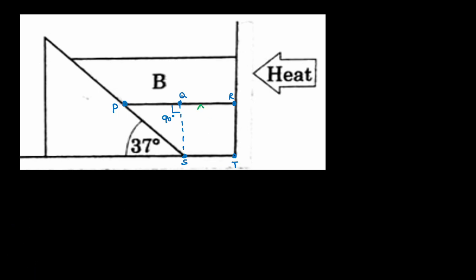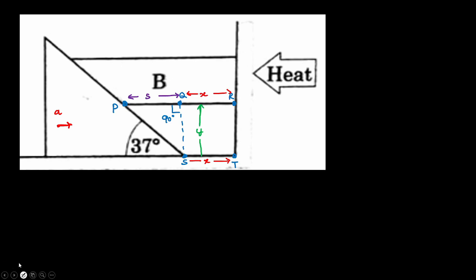We refer to the height of the bar from the horizontal floor as y. If y is increasing the bar is moving upwards; if y is decreasing, the bar is moving downwards. Let the distance from S to T be x — as x decreases the wedge is moving towards the vertical wall. Since the acceleration is directed towards that wall, x is going to decrease. The distance from P to Q I'll call s, and from Q to R is also x.